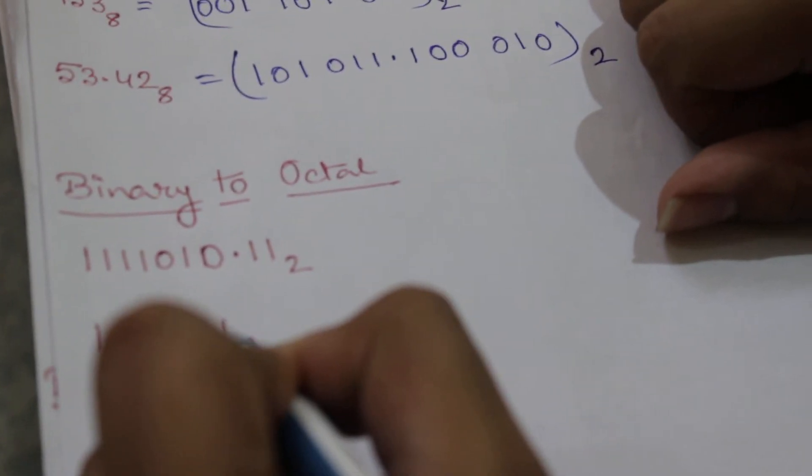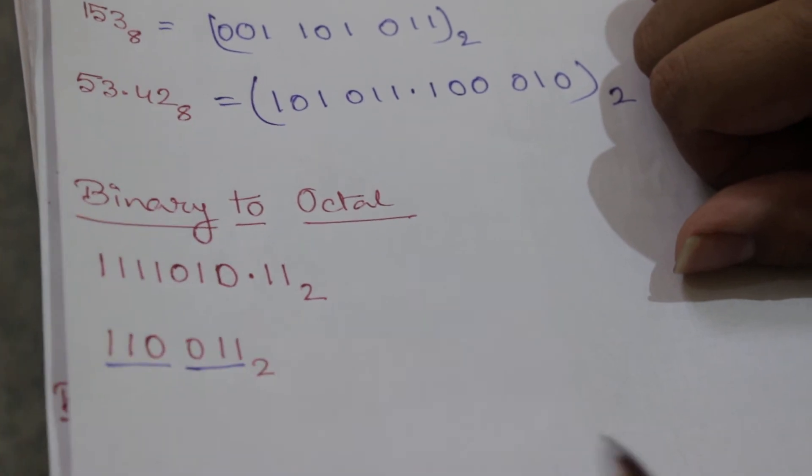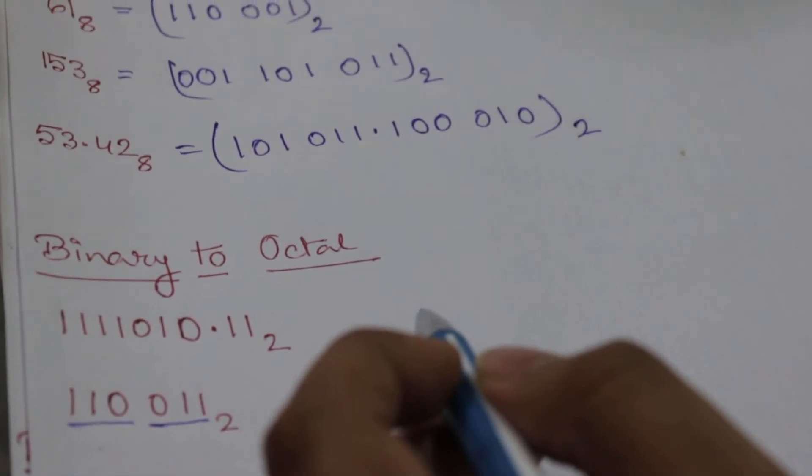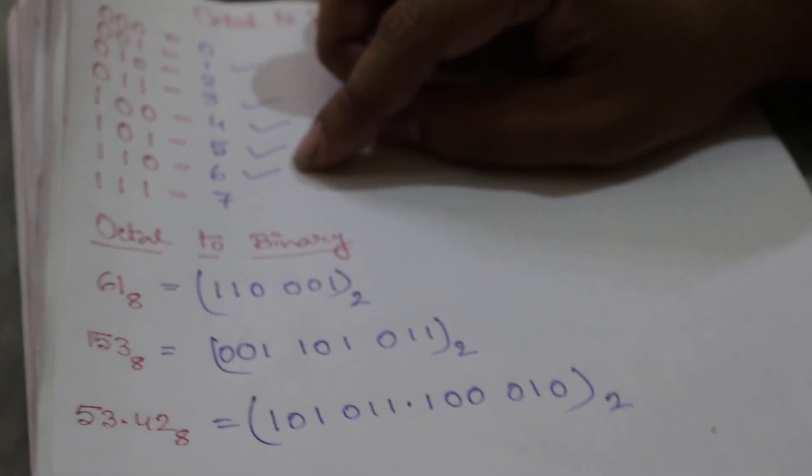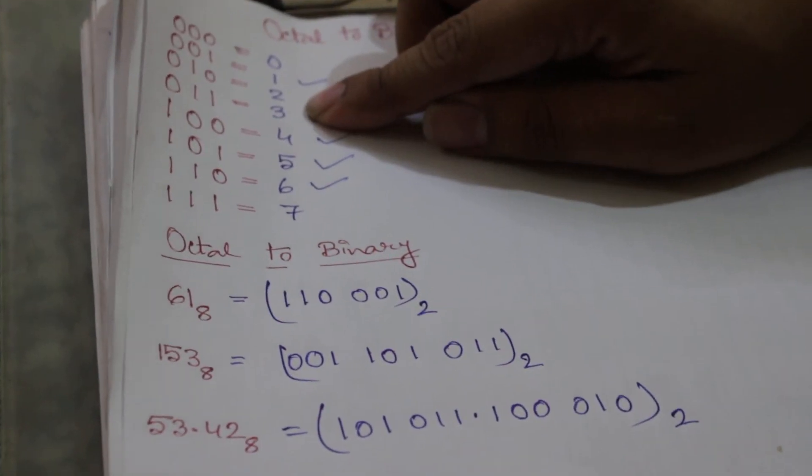So let's take this example first. The number is one one zero zero zero one one. So we will split it in groups. These two, one one zero corresponds to this one six, and zero one one means this one three. So this is its octal equivalent.